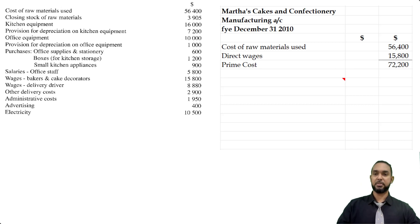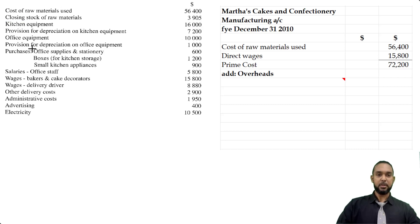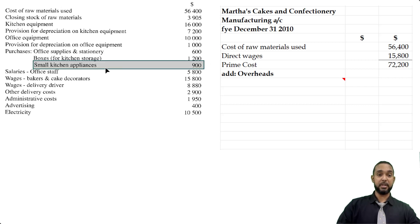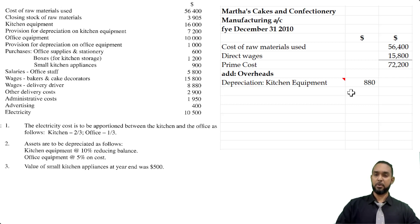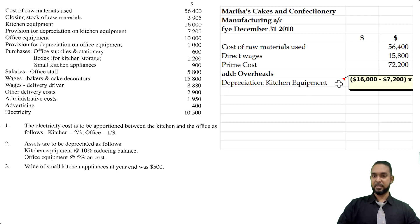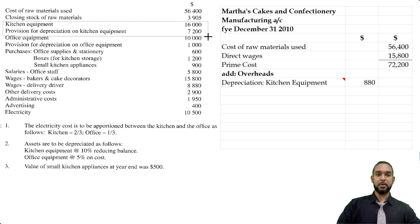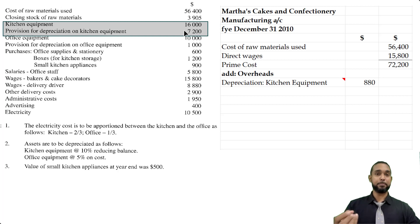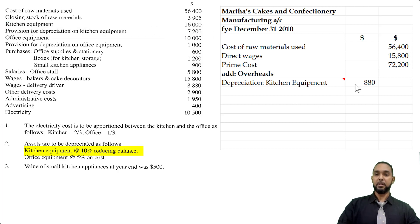Now for overheads. Kitchen equipment depreciation needs to be calculated. Under the reducing balance method, we take the cost of the asset — $16,000 — minus the existing accumulated depreciation of $7,200, giving us net book value. Then we multiply that by the 10% depreciation rate. The figure we get is $880.